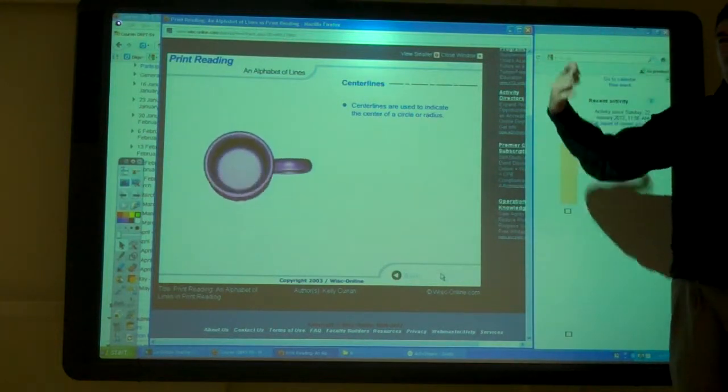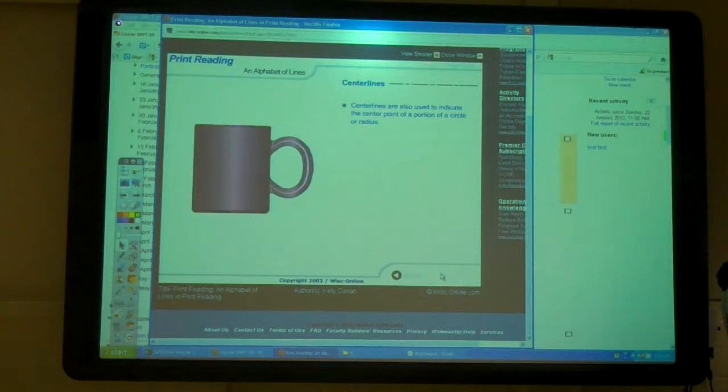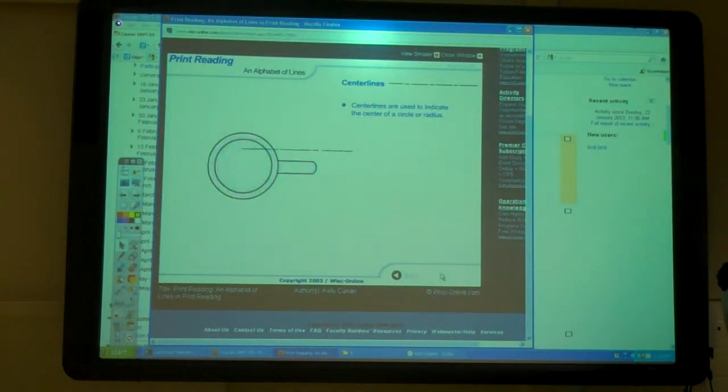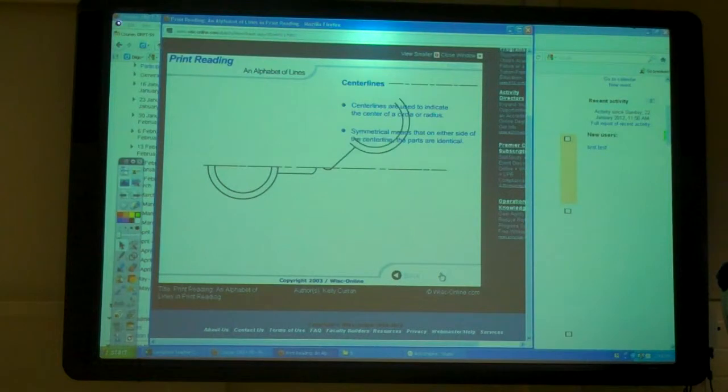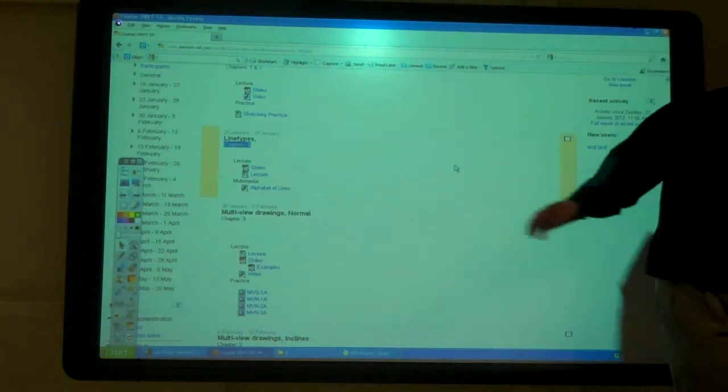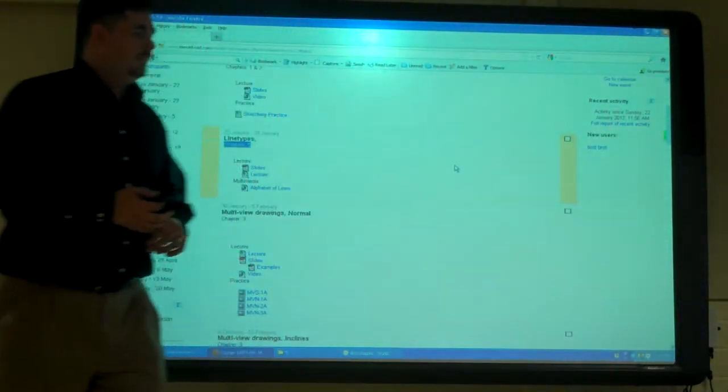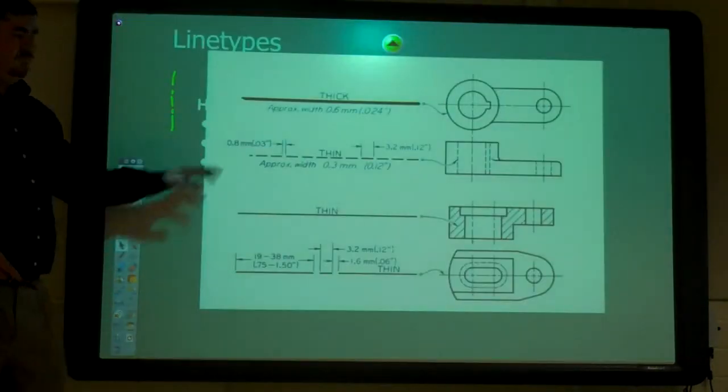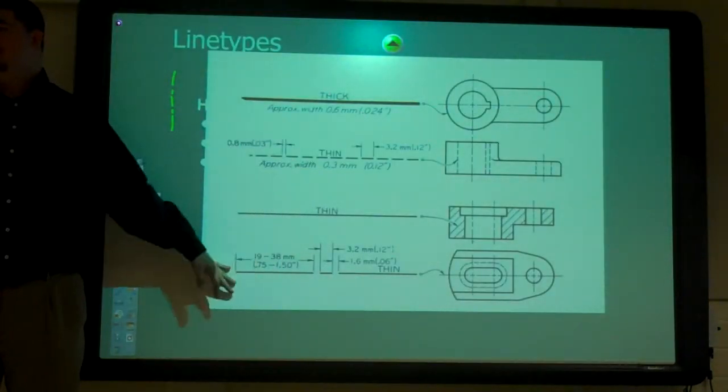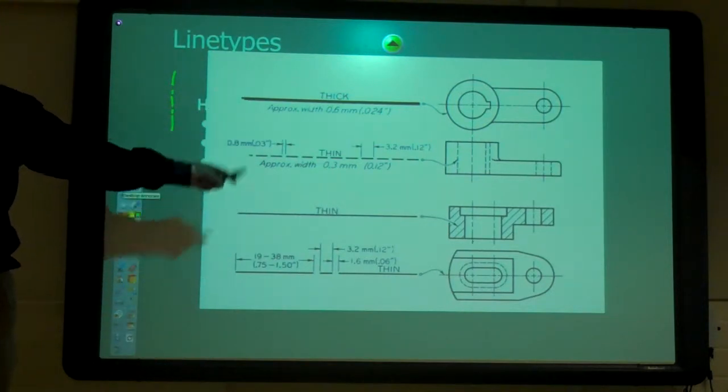It takes you through all the different things. It goes through some of the other ones also, goes through dimension lines and everything else we're going to do. So go through that, take a look at it. In your book, it has one kind of like this. All books have one that's pretty much the same.